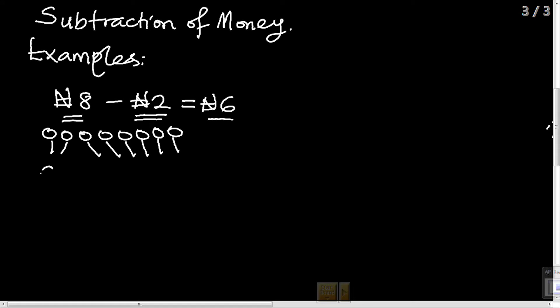Another example: 9 Kobo minus 6 Kobo. We represent our 9 with circles: 1, 2, 3, 4, 5, 6, 7, 8, 9. Take away 6: 1, 2, 3, 4, 5, 6. What's left: 1, 2, 3. 9 Kobo minus 6 Kobo gives 3 Kobo.